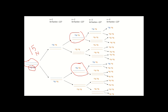In generation 3, each ¹⁵N/¹⁴N duplex produces one ¹⁵N/¹⁴N and one ¹⁴N/¹⁴N; all ¹⁴N/¹⁴N duplexes replicate to give only ¹⁴N/¹⁴N. The result is 2 intermediate-density duplexes out of a total of 8 (2³). The fraction is 2 divided by 2³.